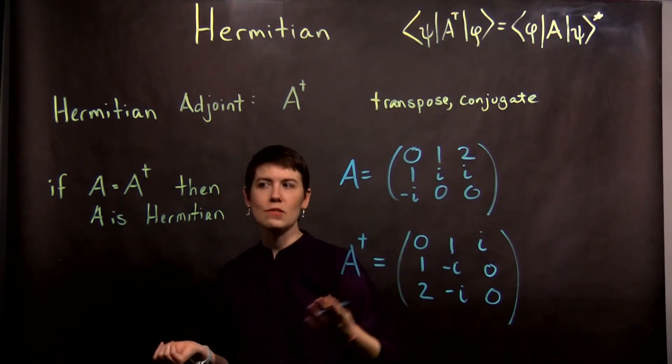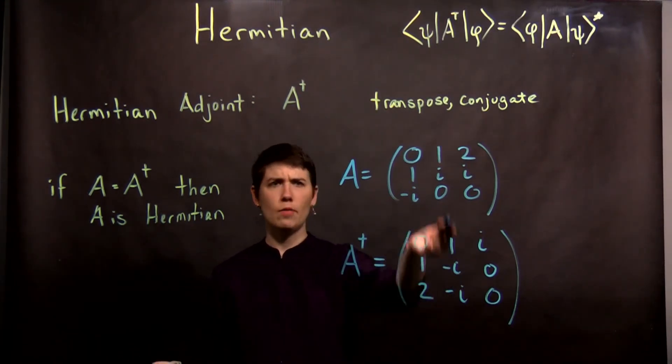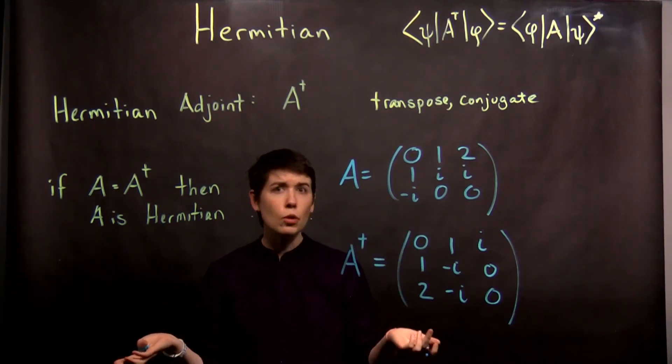So we can ask the question, is this equal, are these two things equal? No, obviously these are different. So we would say that A is not Hermitian. That's okay.